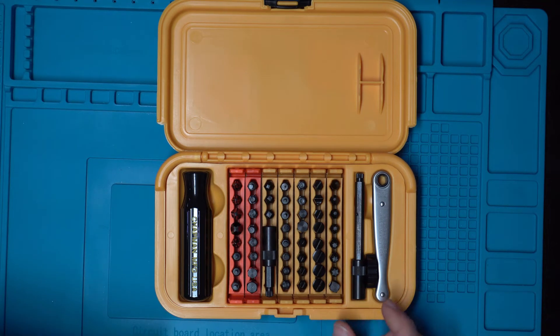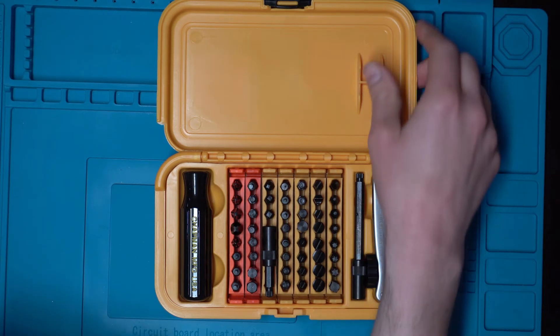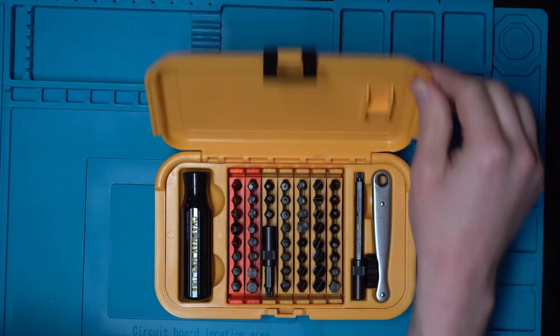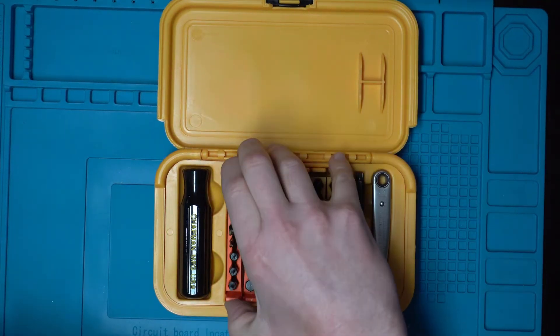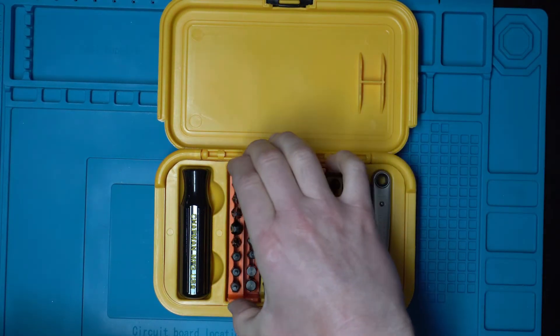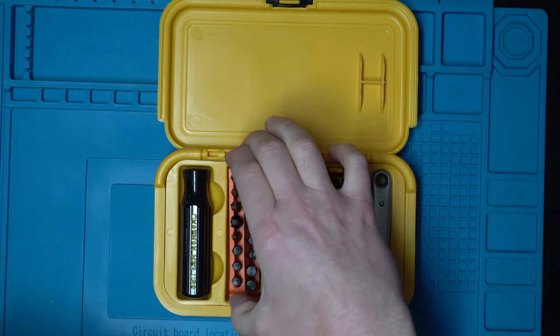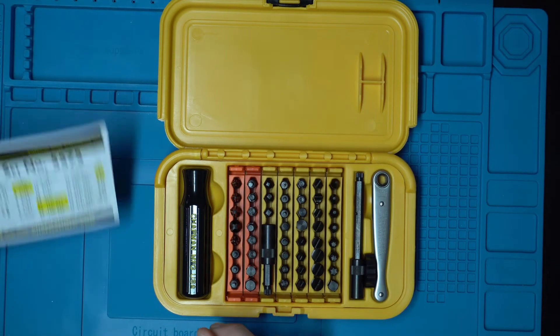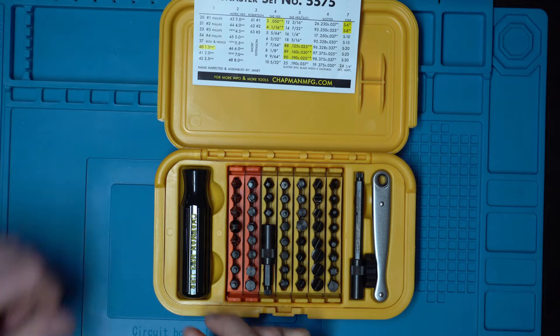Each one of the bits is made out of hardened tool steel with an oxide covering, and it comes in this really nice case here. Each one of these rows comes out and allows you to easily take it and go with you.